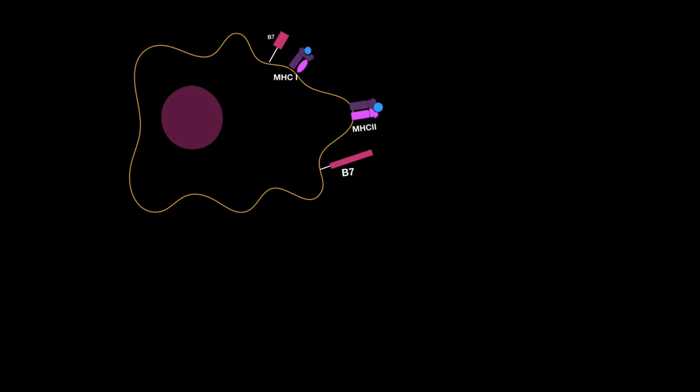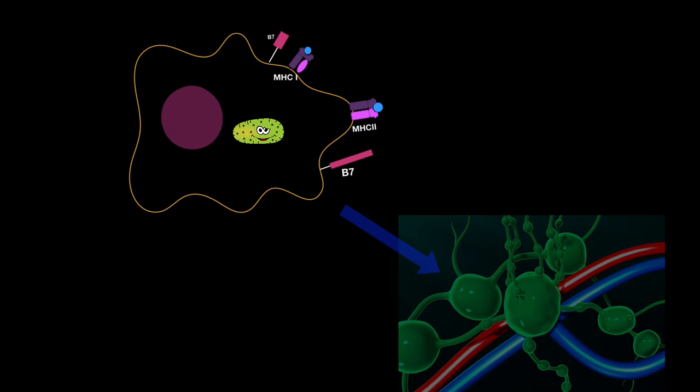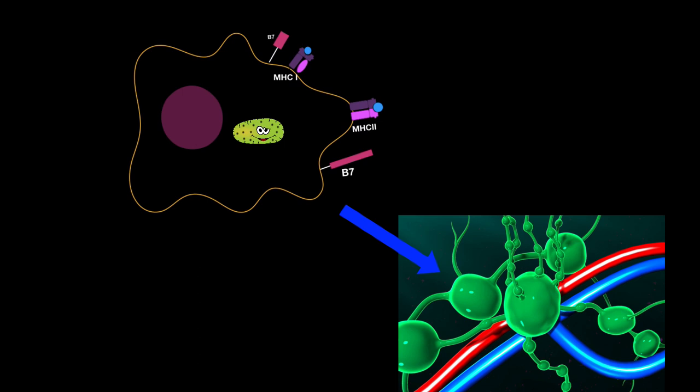B7 is a major co-stimulator for the T-cells we have in our body. Let's put this to practice. Let's say this antigen-presenting cell just catches a microorganism. It then migrates to the lymph node through the lymph vessels, because the lymph vessels drain the interstitial fluid we have in the tissue. So these cells can go through them and reach the lymph nodes and then reach the naive T-cells in the paracortex.